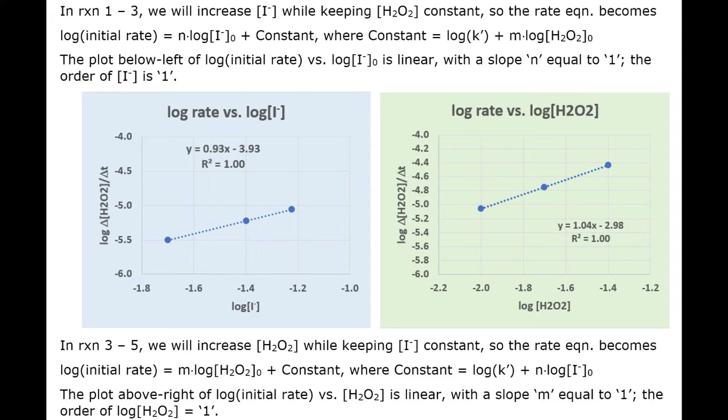A plot of the log of the rate of peroxide decomposition versus the log of the concentration of iodide is quite linear. R² is 1 and its slope is 0.93, essentially 1, indicating a first order relationship with respect to iodide concentration.